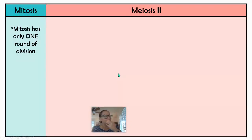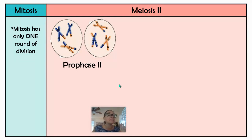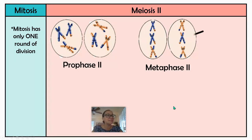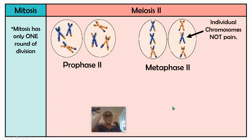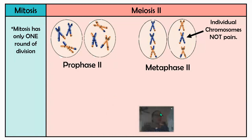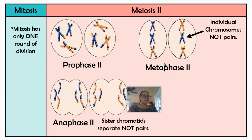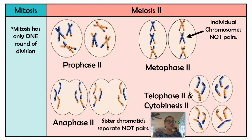In meiosis two, we have prophase two — chromosomes condense and the nuclear envelope breaks down — very similar to mitosis. In metaphase two it's no longer pairs; it's individual duplicated chromosomes lining up along the middle of the cell, and you can still see the recombinant chromosomes from crossing over. In anaphase two, it's the sister chromatids that separate, not pairs. Then in telophase and cytokinesis we end up with four genetically different haploid cells.